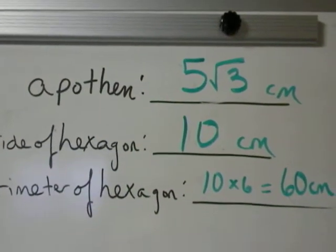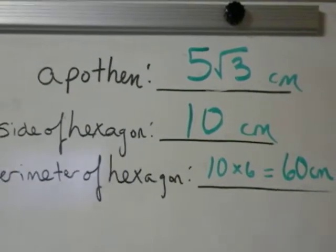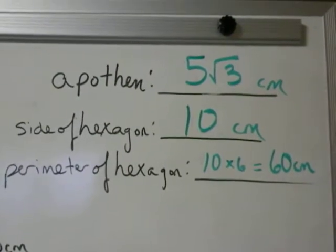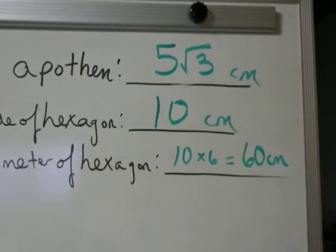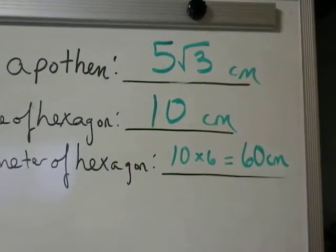The apothem is 5 radical 3 centimeters. The side of a hexagon is 10 centimeters, so the perimeter of the hexagon is found by taking 10 multiplied by 6 to get 60 centimeters for the perimeter of the hexagon.